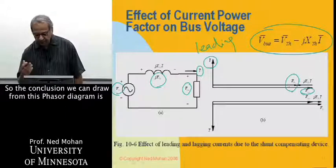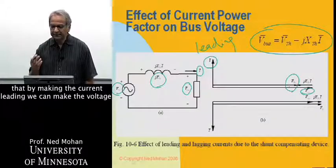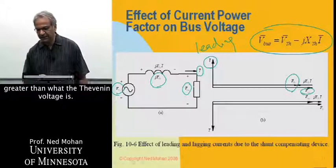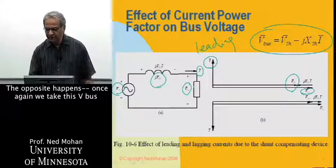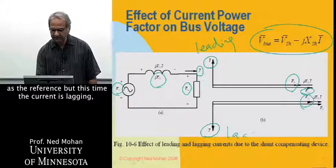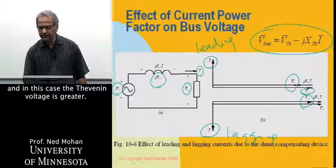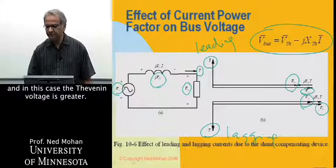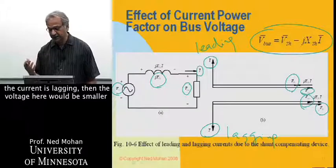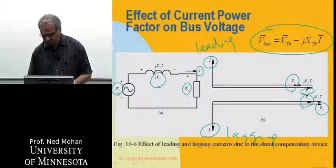The conclusion we can draw from this phasor diagram is that by making the current leading, we can make the voltage at this bus greater than what the Thevenin voltage is. The opposite happens when the current is lagging the bus voltage — in that case, the Thevenin voltage is greater, meaning the bus voltage would be smaller in magnitude compared to the Thevenin voltage.